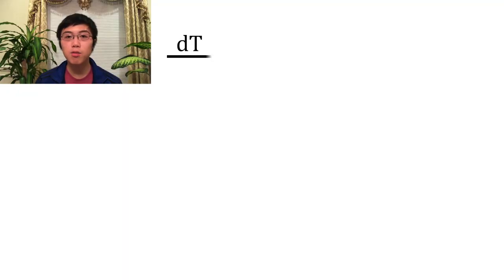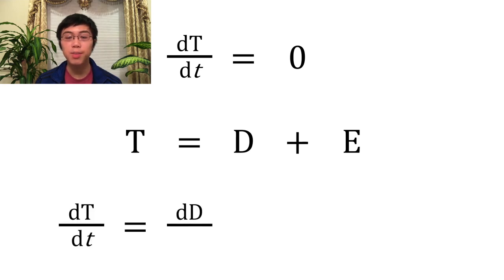This assumption implies that the total number of trucks on the road doesn't actually change, which allows us to write this differential equation. Since a fleet is made up of diesel and electric trucks, we can rewrite this differential equation in terms of those two variables. However, Jesse will now explain why we chose to run a simulation instead of solving this equation analytically or approximately.